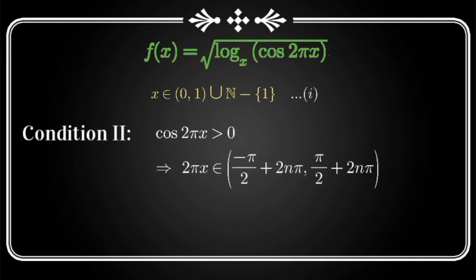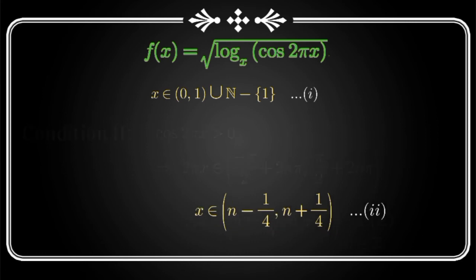So now let me divide this whole thing by 2π. So what I get is x belongs to n minus 1 by 4 to n plus 1 by 4. Now we got interval for x in second condition too.